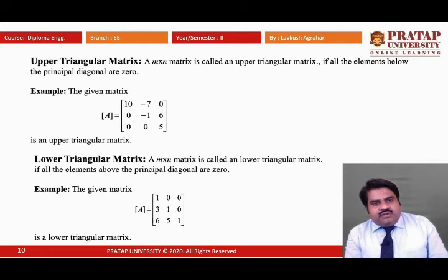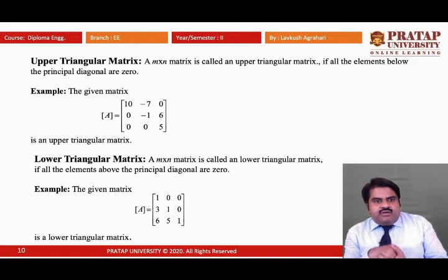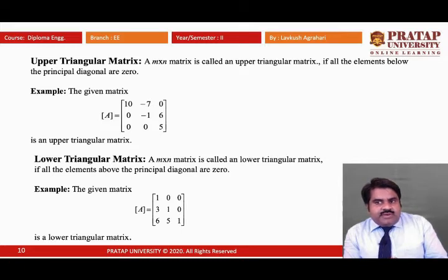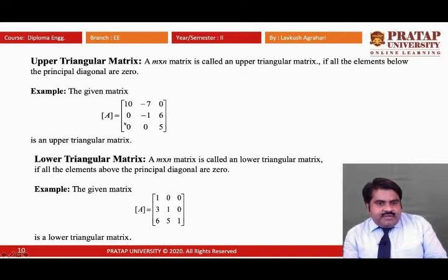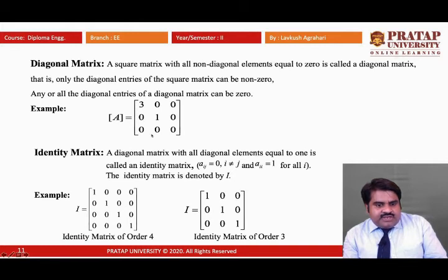Now, the triangular matrix. There are two types: upper triangular and lower triangular. An M×N matrix is called an upper triangular matrix if all elements below the principal diagonal are zero. For example, in matrix A, the diagonal elements are 10, -1, 5, and all elements below this diagonal are zero. Therefore, this type of matrix is called an upper triangular matrix.